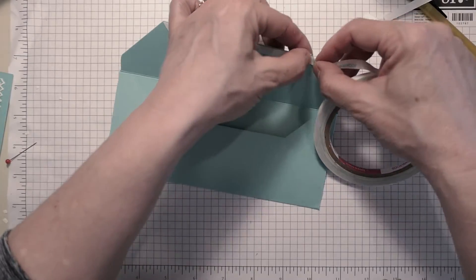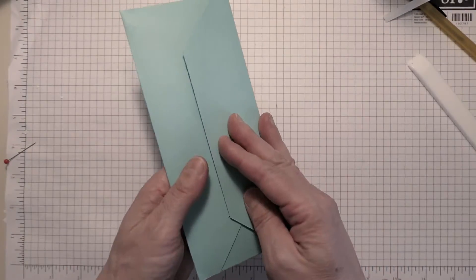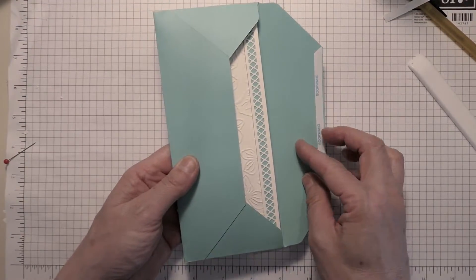One thing I usually do when I'm making cards ahead of time is I'll put a little bit of tape on top, leaving the release paper on, so that when I'm ready to send something I can just remove the release paper.